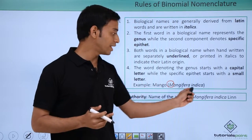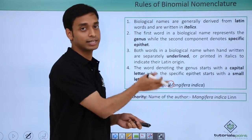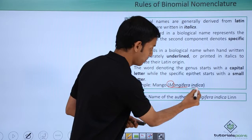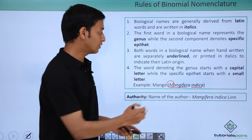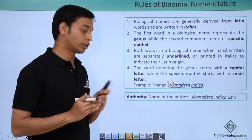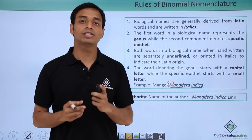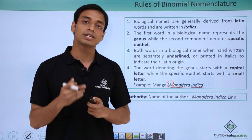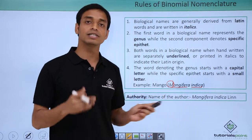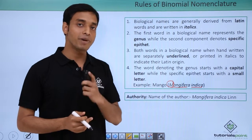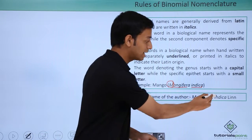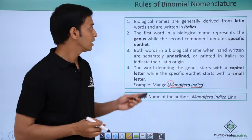For example, mango is known as Mangifera indica — italicized here because we are viewing it in computerized mode; if written on paper it would be underlined separately. Notice the first letter is capitalized. Another important concept is authority: every species has been discovered or described by some scientist, who is given the privilege of including their name at the end of the scientific name. For example, mango was first described by Linnaeus, so it is written as Mangifera indica L. in abbreviated form.